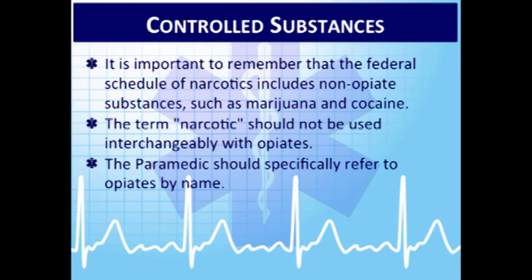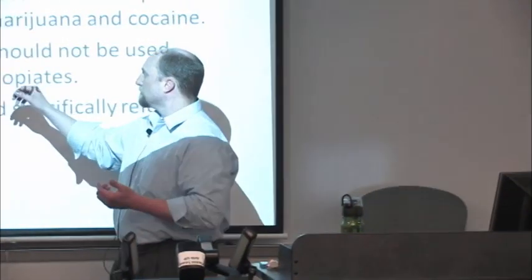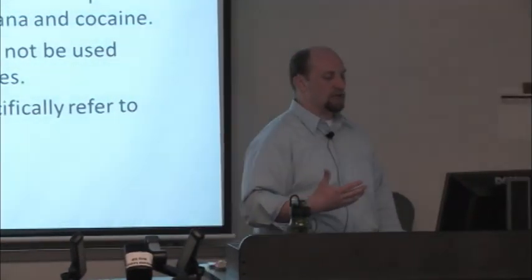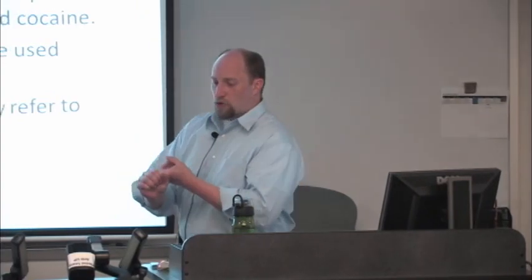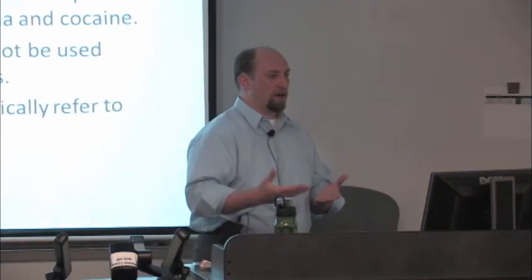Controlled substances: a lot of this slide differentiates between narcotics and other controlled substances. Narcotics are actually derived from opiates — used interchangeably with opioids. Marijuana and cocaine are not narcotics — they are different classes of medications. Heroin is an example of a narcotic which is an opioid. Hydrocodone, hydromorphone, and morphine are all examples of narcotics that are opioids.